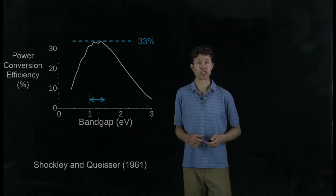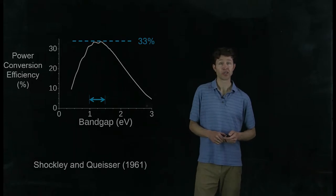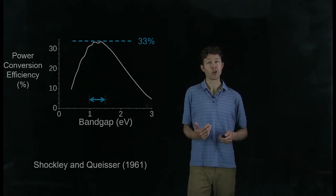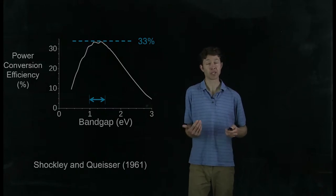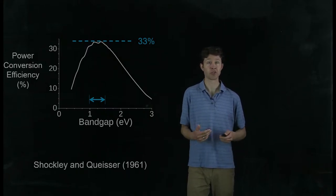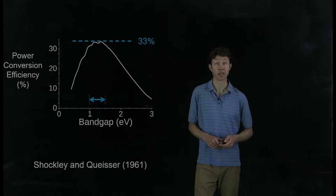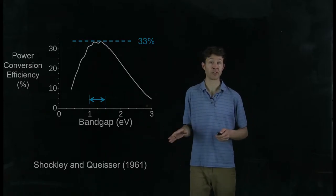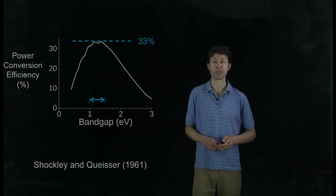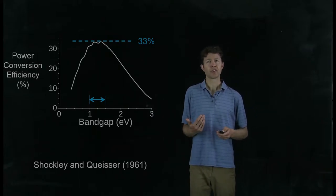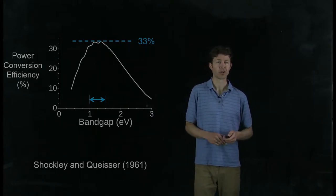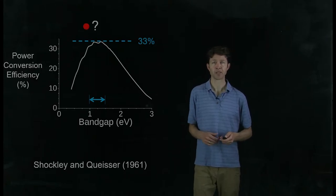In the 1960s, Shockley and Queisser did a calculation estimating that only 33% power conversion efficiency is possible in any single junction solar cell under unconcentrated sunlight. This limit that they calculated could be even less if you don't have the right bandgap of the material. So is there any way we could beat this limit that Shockley and Queisser calculated? Is there a material that would go above this 33% line?